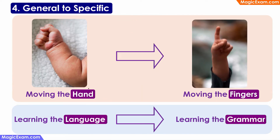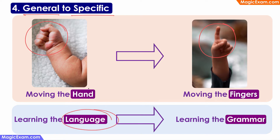The next important principle of development is general to specific. For example, in physical development, the child will first learn to move the entire hand, which is a general movement, and only then learn to move each finger specifically or independently. Similarly, in language development, the child will first learn the language, which is general in nature, and then move towards specifics such as the grammar of that language. Therefore, all types of development will start with the generic or general aspects first and only then move towards specific aspects. This is the principle of general to specific.